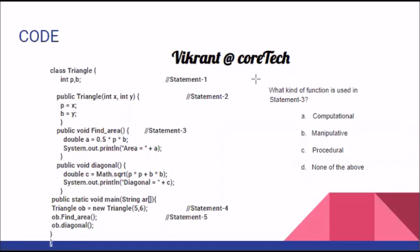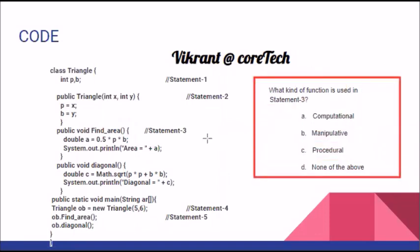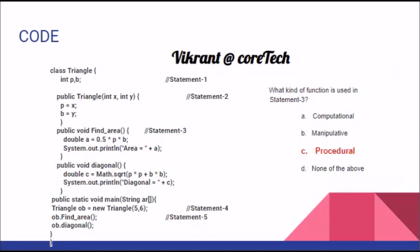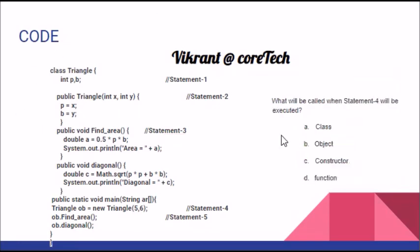What kind of function is used in statement three? This is statement three. The function is not returning anything, so it can neither be computational nor manipulative. The function is void. That is why the correct answer is option C — a procedural function.